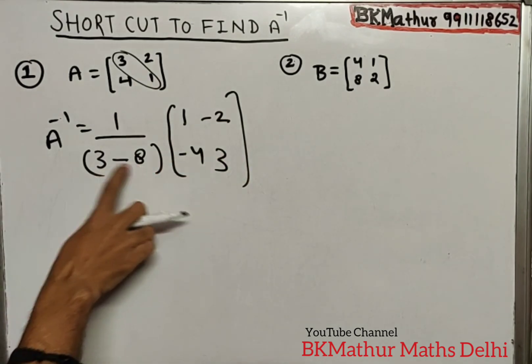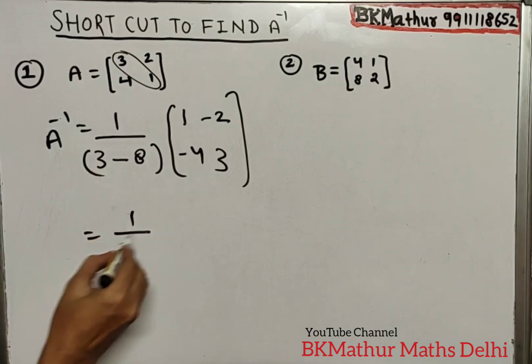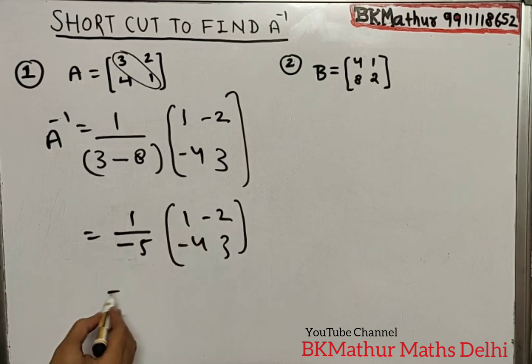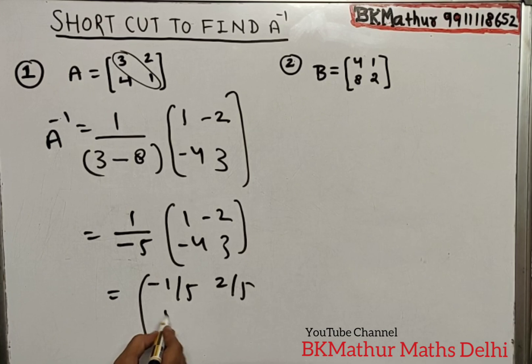That means minus 5. This will be 1 upon 5, here will be plus 4 upon 5, and minus 3 upon 5. This is your result.